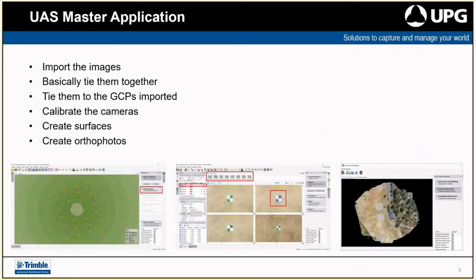Within the UAS Master application, the process basically starts with importing images and setting up the project. We tie the images together — the images overlap and we know their GPS location based on their EXIF data, so we can work out where those images basically lie. A tie point extraction creates a whole heap of points throughout all the images and ties them together so we have a good set of overlap and know where they're all located against one another.